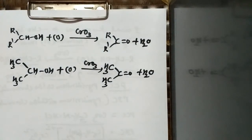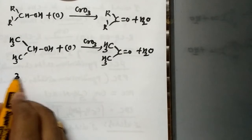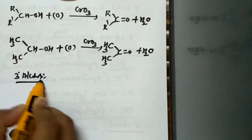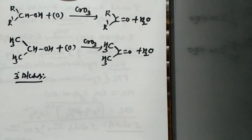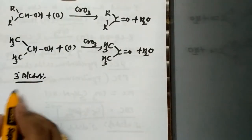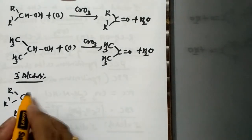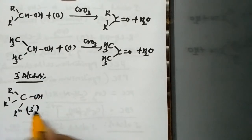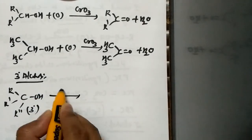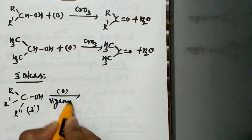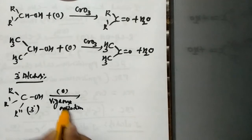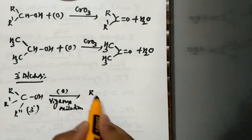When we discuss the oxidation of tertiary alcohols, tertiary alcohols subjected to oxidation give carboxylic acids as the major product along with a ketone intermediate. A tertiary alcohol of the form R-R'-R''-C-OH, when subjected to vigorous oxidation, first gives rise to a ketone.